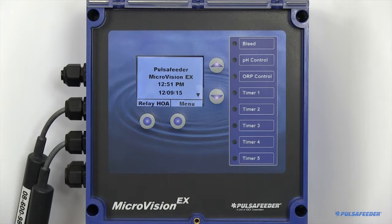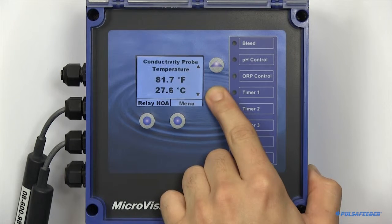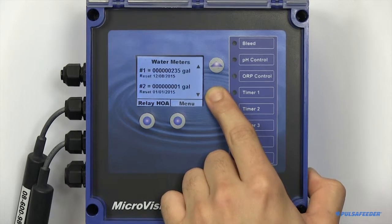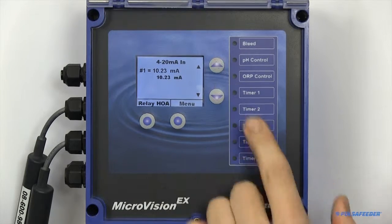Upon booting your MicroVision EX, you'll be welcomed by the home screen. Featured on the home screen will be the name of the unit, your date and time, any of your probe readings, the temperature, water meter readings, and any of the 4-20 milliamp in readings if they are enabled.